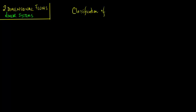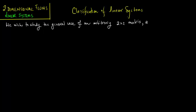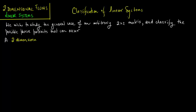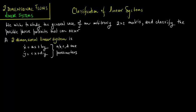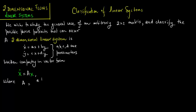In this lecture we deal with the classification of linear systems. We wish to study the general case of an arbitrary 2 by 2 matrix and classify the possible phase portraits that can occur. A two-dimensional linear system is x dot equal to ax plus by, y dot equal to cx plus dy, where a, b, c, d are parameters. Written compactly in vector form, we get x dot equal to A times x, where A is the matrix with entries a, b, c, d and x is the vector of x and y.